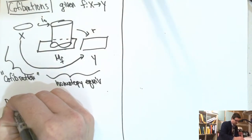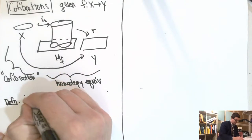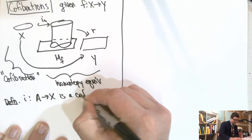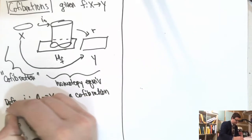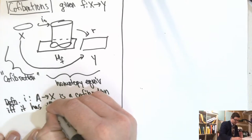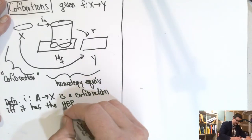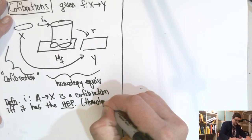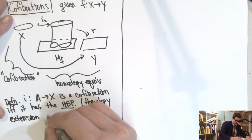This begs the question: what is this special property that a co-fibration has? The definition is that a map i from A to X is a co-fibration if and only if it has the homotopy extension property.